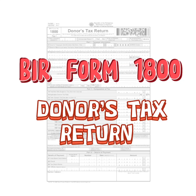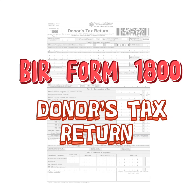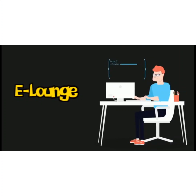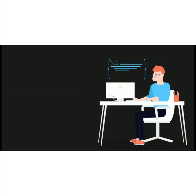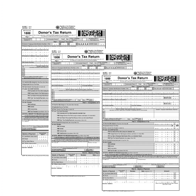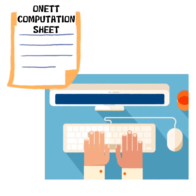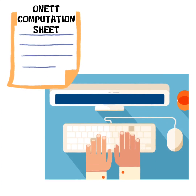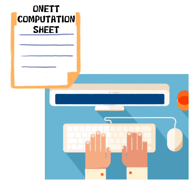After the computation from the ONETT counters, you may opt to seek assistance with the e-lounge for the printing of the tax return, or fill up the return manually. For manual filling up, get 3 copies of BIR Form 1800 at the forms desk. You will then be copying the details in the ONETT computation sheet onto the BIR form.